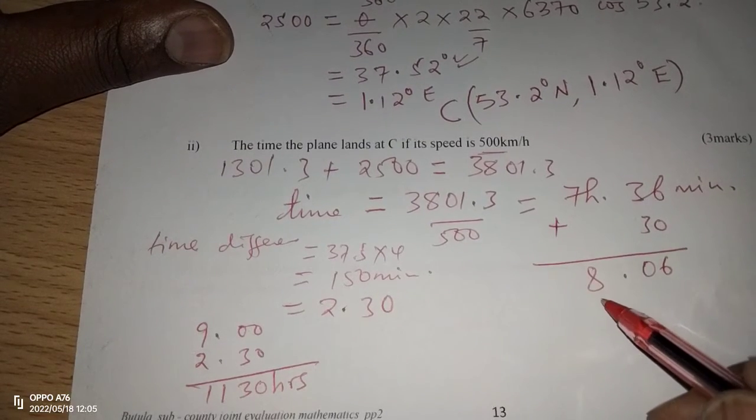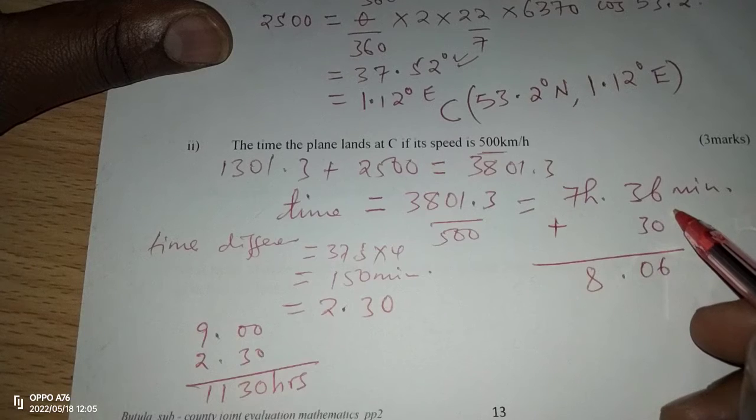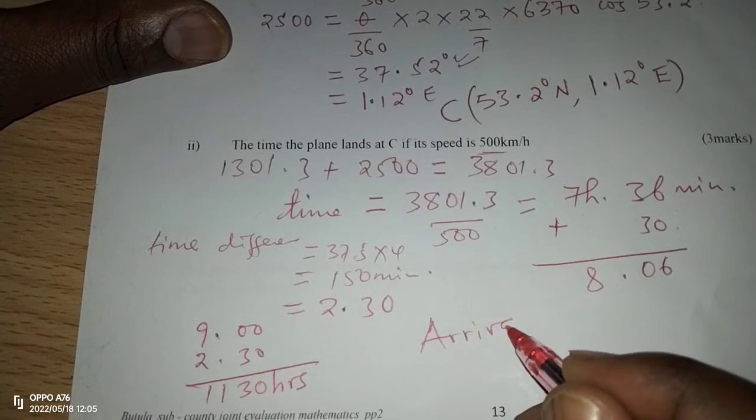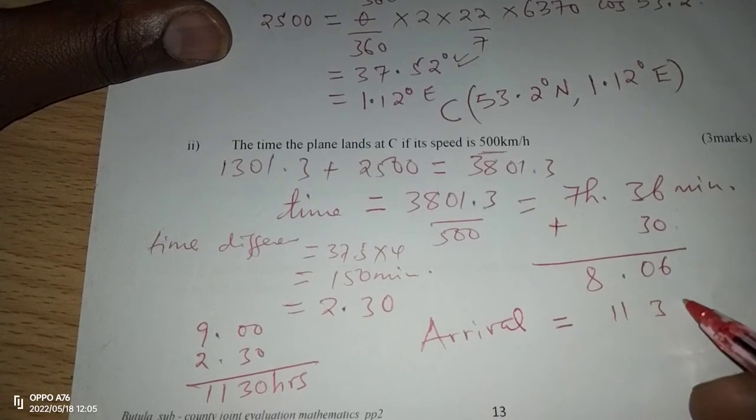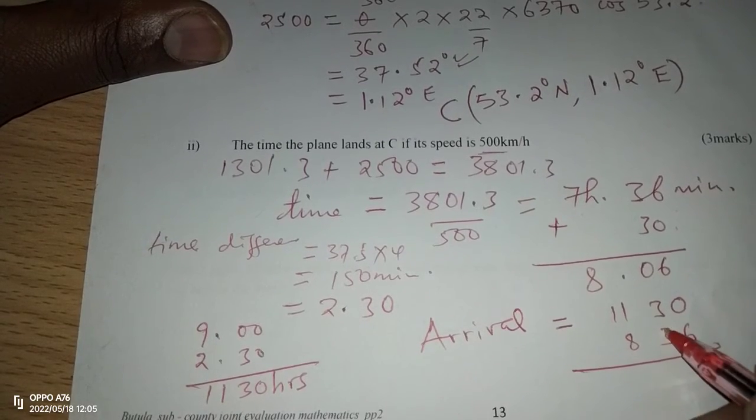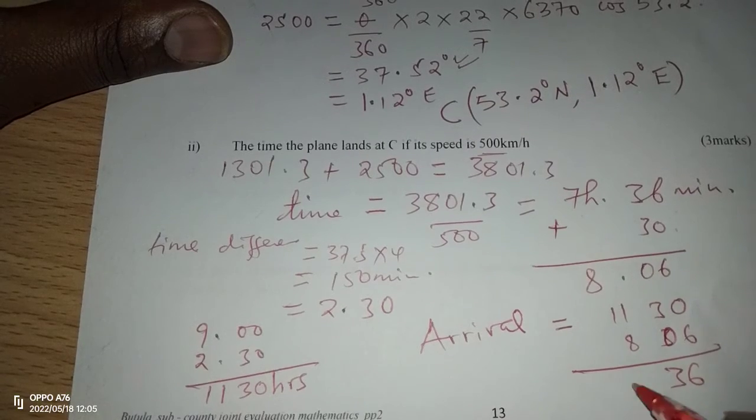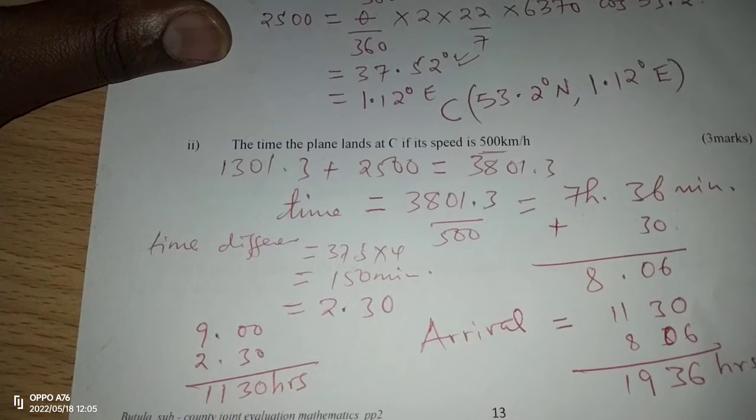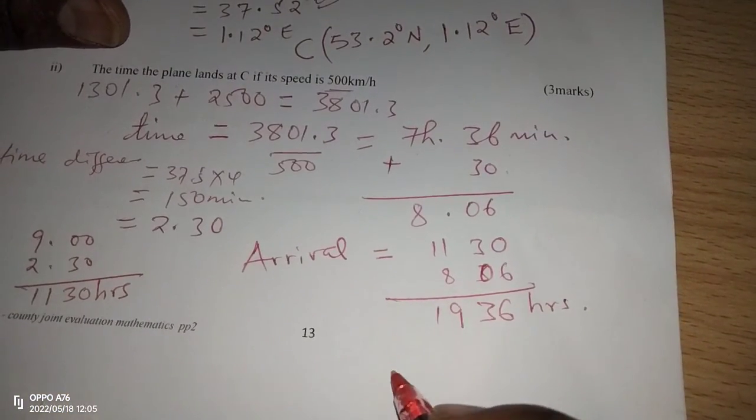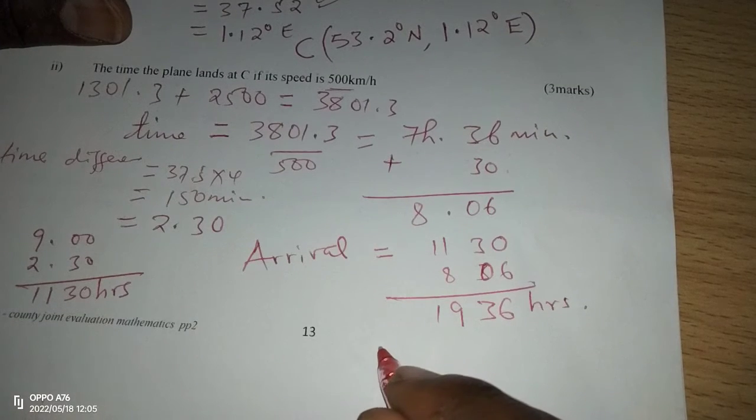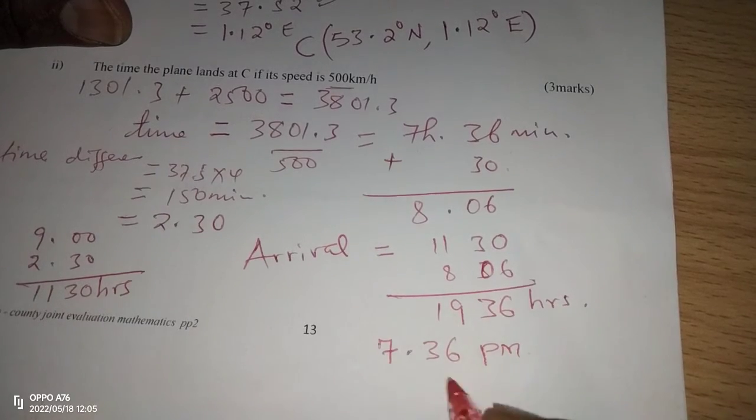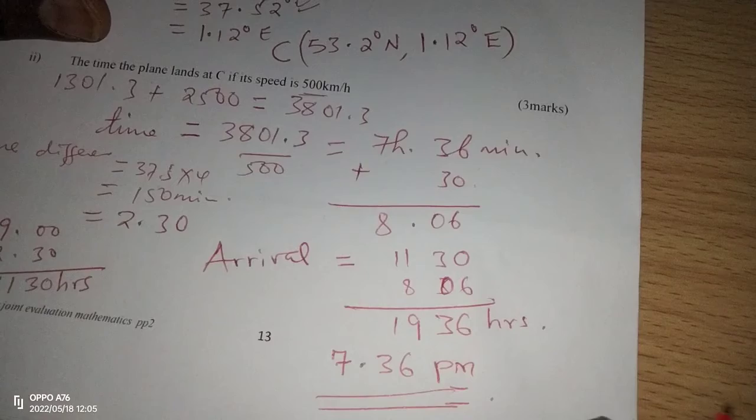And now, it took all this time, 7 hours 36 minutes to travel, and 30 minutes stoppage. So which means arrival time is going to be 11:30 plus 8:06. This gives us 19:36 hours, which is the time of arrival on the same day. And we can also express it in the 12-hour clock system, whereby this will be 7:36 p.m. So that is the time of arrival.